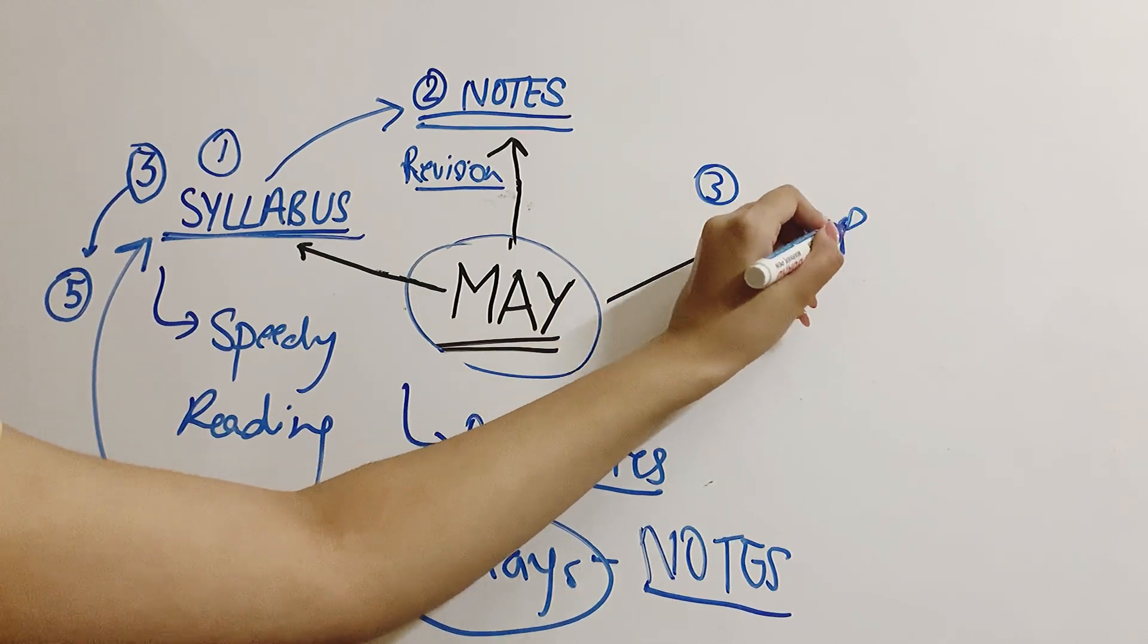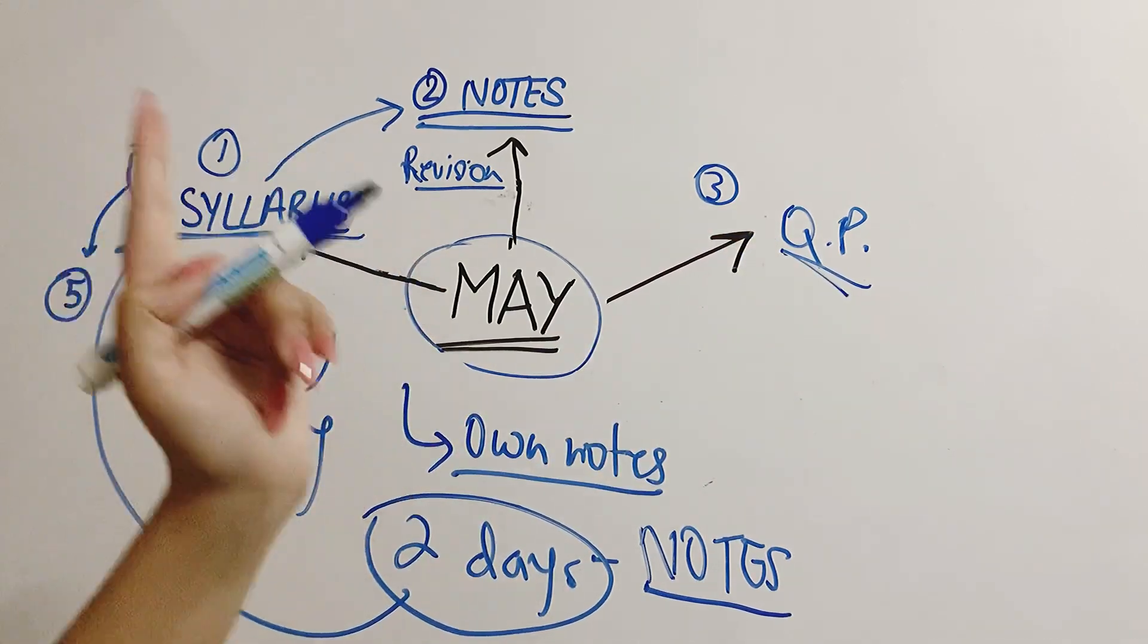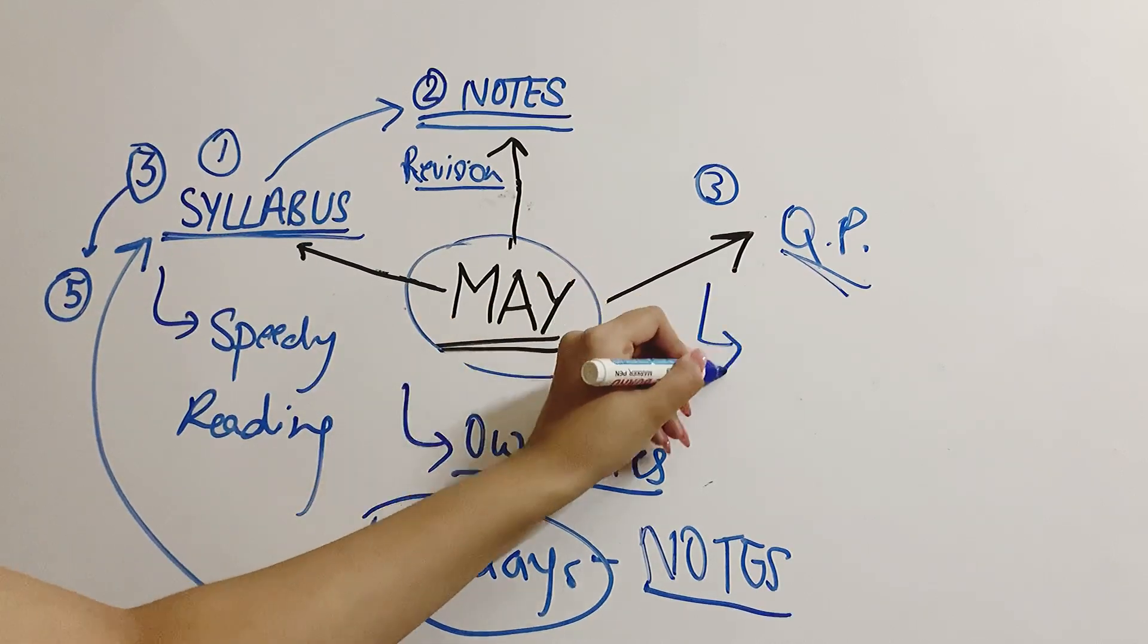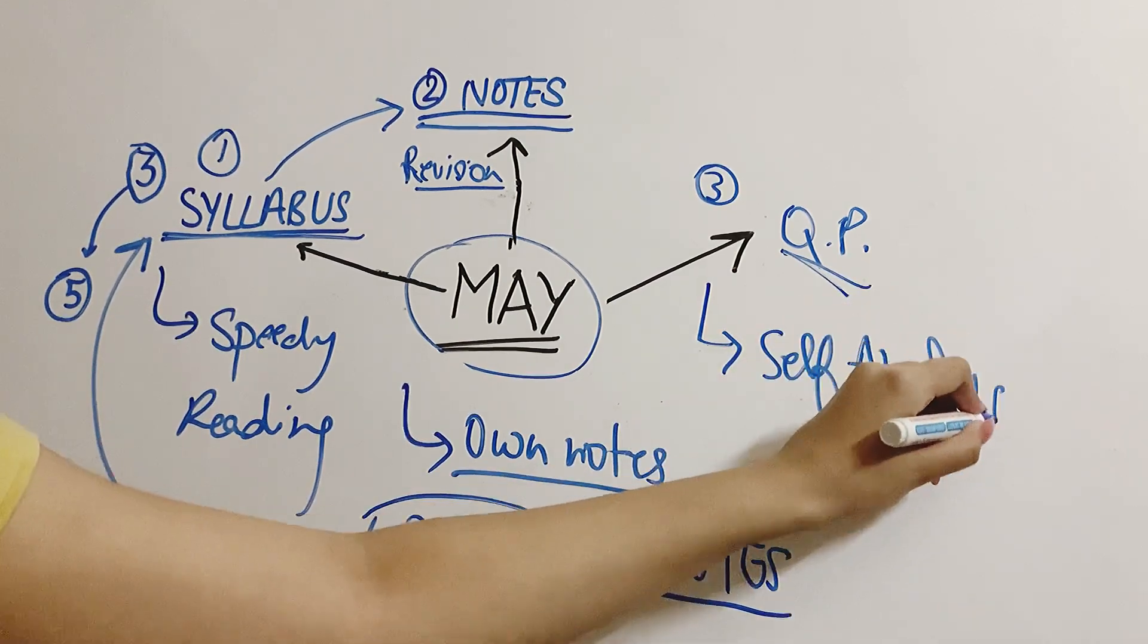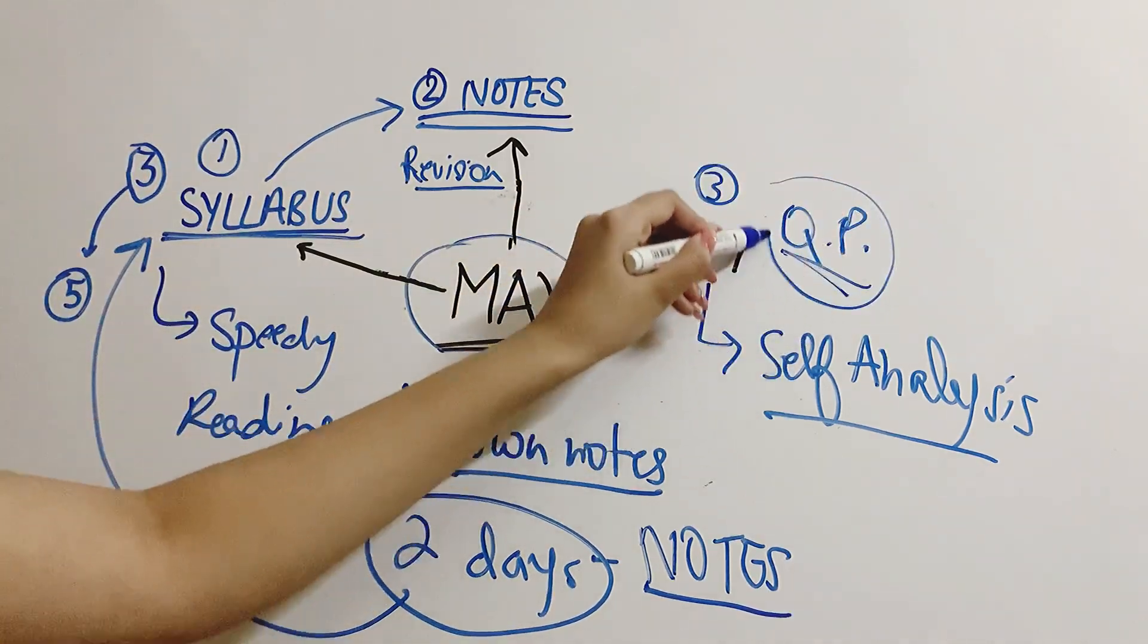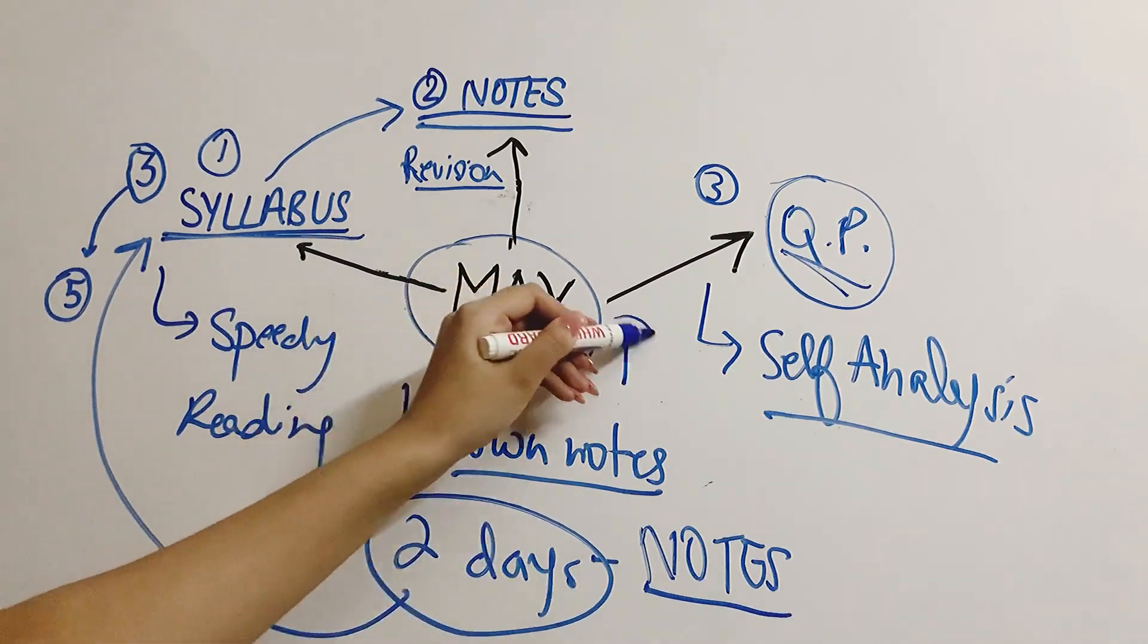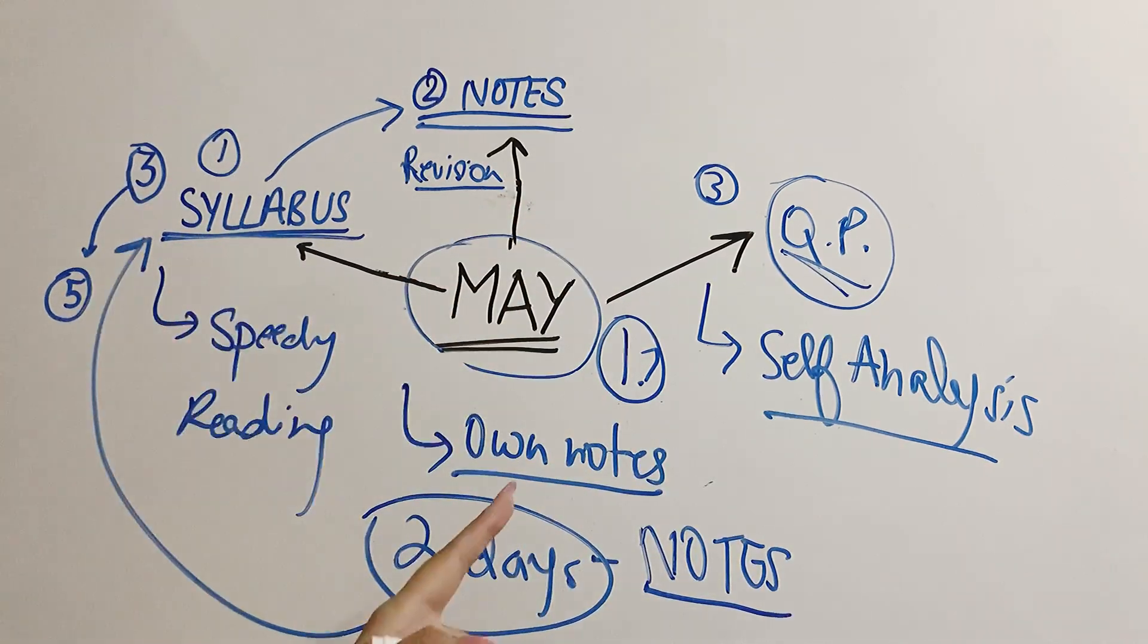Question papers. This is our third thing. After doing all this, we will sit and we will attempt past year papers or any random question answers. We will analyze our own self. Self analysis. So this is why I told you to first read, then notes, and then analyze yourself through question papers. Give yourself a board exam so that you know where you stand and what will be your scene in boards, what will be your outcome. We get to know in advance.